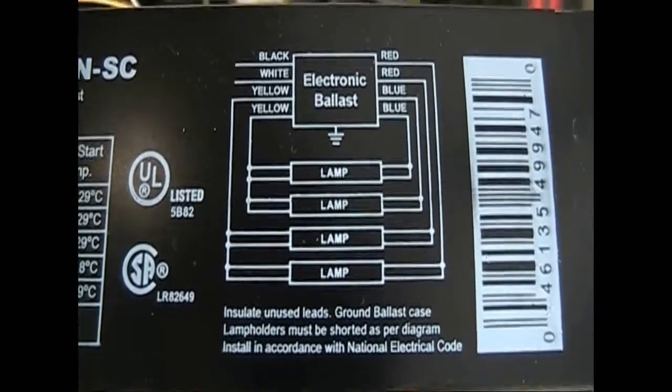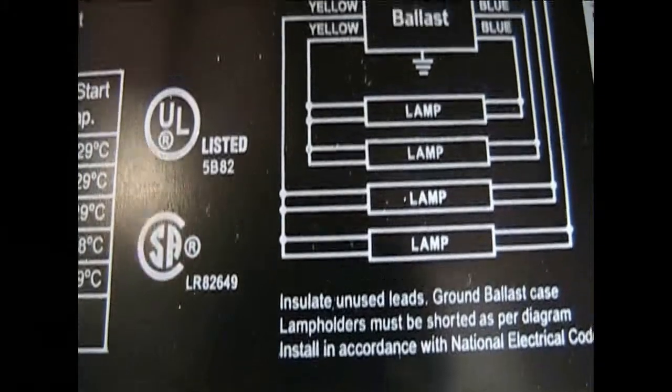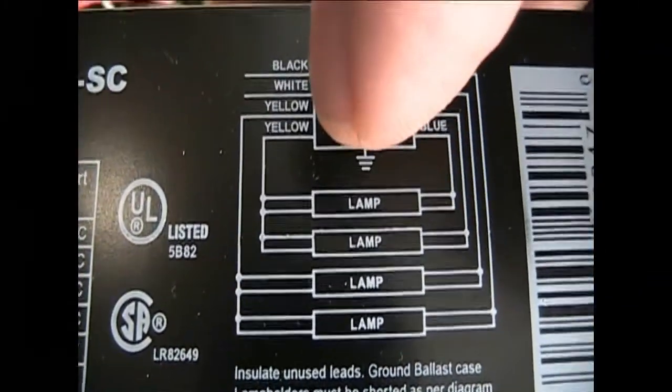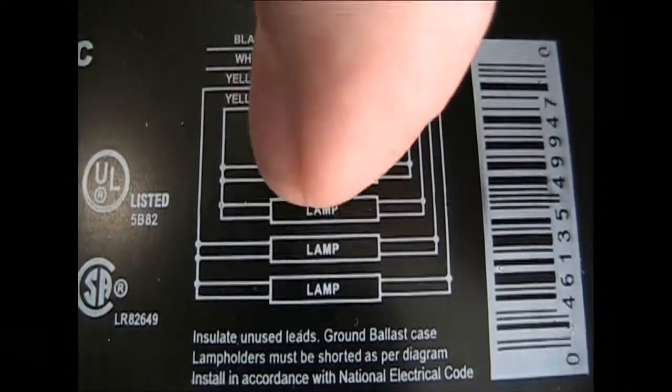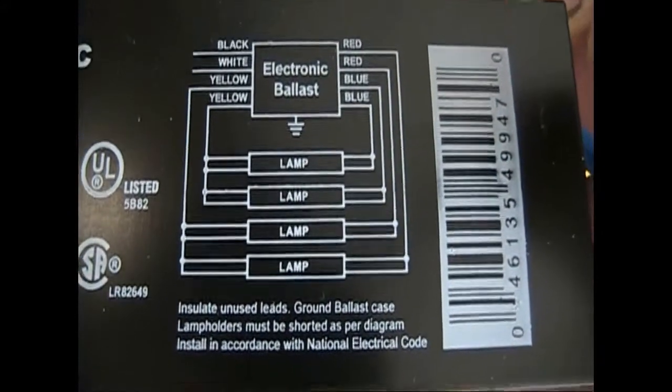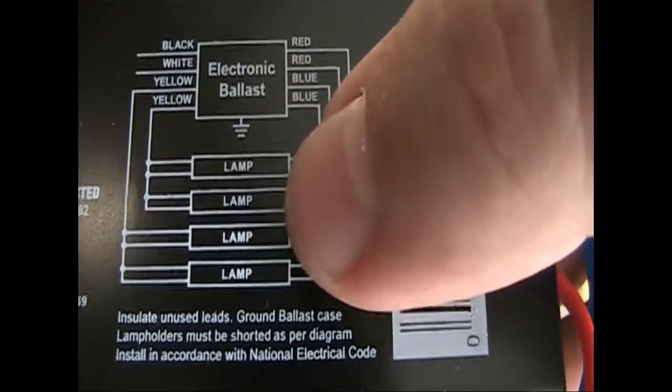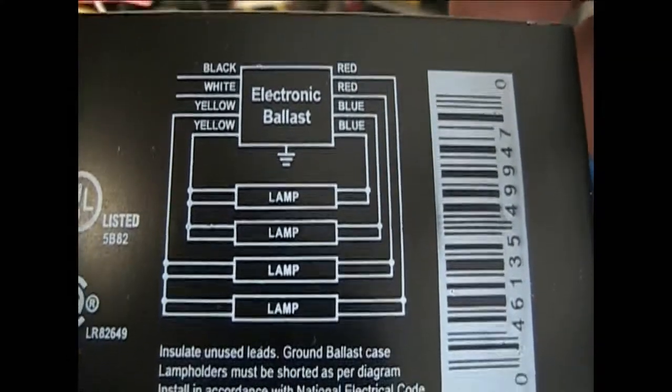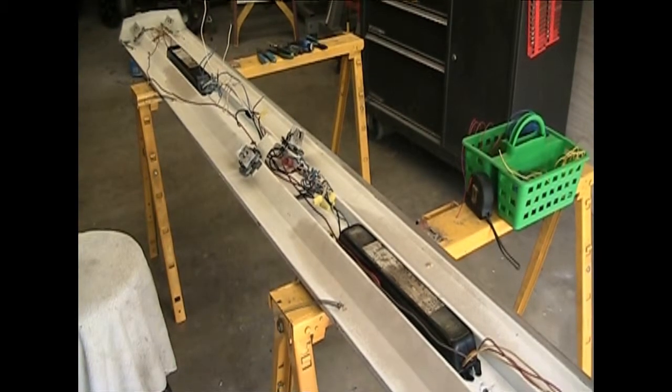First of all, on all ballasts there's a wiring diagram. As you can see, we have yellow that runs the bulbs that are jumped. One wire runs two bulbs. The other wire runs two bulbs. Then we have the red over here. That runs over and runs two bulbs. Then the blue runs two bulbs individually. So we're going to have to do a lot of jumping on the receptacles. I'll show you how that's done in a minute.